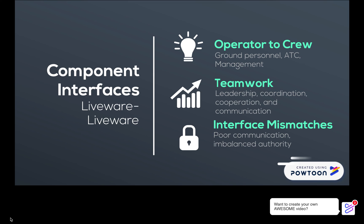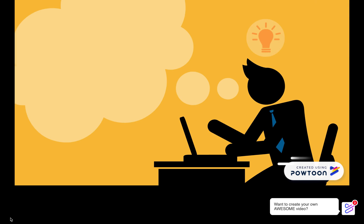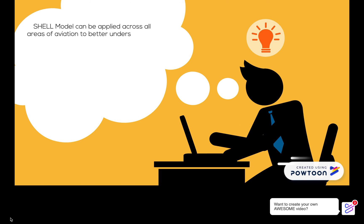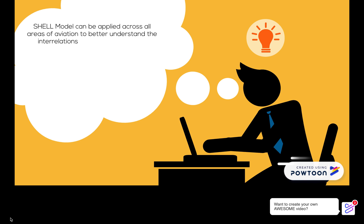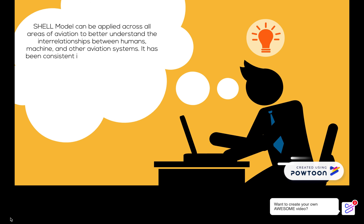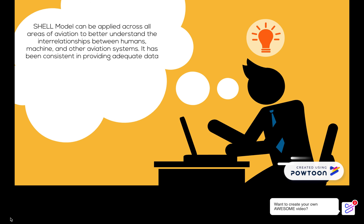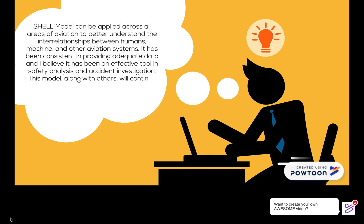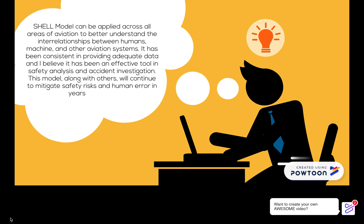Mismatches include poor communication and an imbalanced authority. This model can be applied across all areas of aviation to better understand the interrelationships between humans, machines, and other aviation systems. It has been consistent in providing adequate data, and I believe it has been an effective tool in safety analysis and accident investigation. This model, along with others, will continue to mitigate safety risks and human error in years to come.